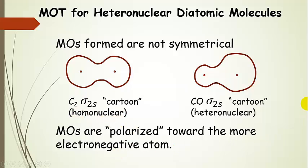Now, molecular orbitals for heteronuclear diatomics are polarized toward the more electronegative atom. So this is carbon monoxide, and we have oxygen here with a lot more electron density than carbon. And so the electron density is polarized toward oxygen in this heteronuclear diatomic.